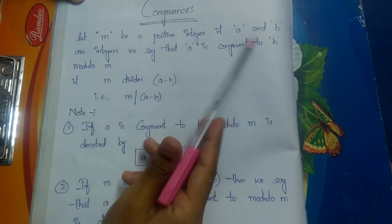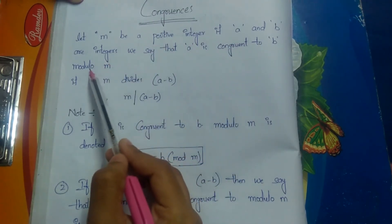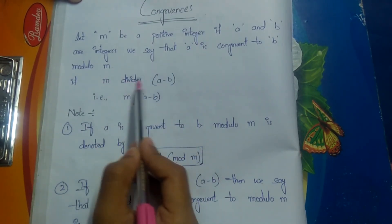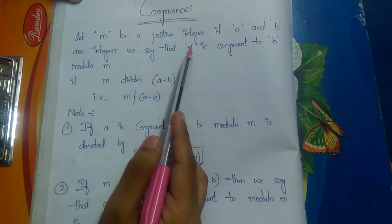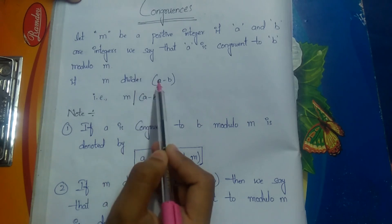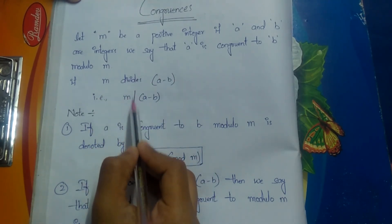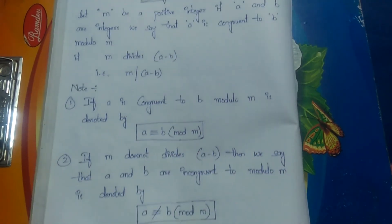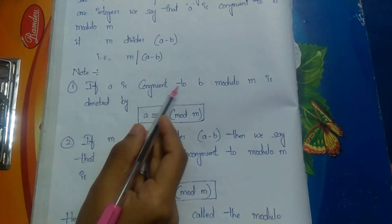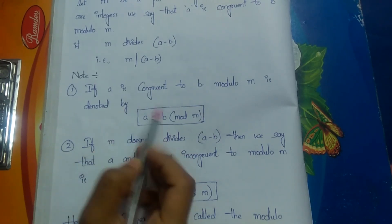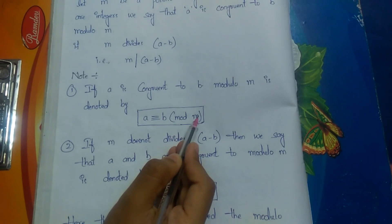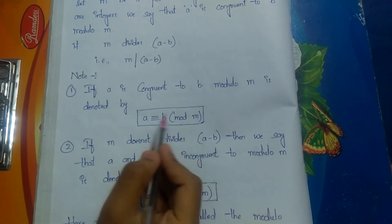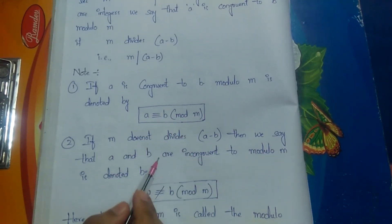Here m, a, and b are positive integers. We say a is congruent to b modulo m if m divides a minus b. The notation is: a ≡ b (mod m), where mod m means modulo m. So a is congruent to b modulo m means m divides a minus b.